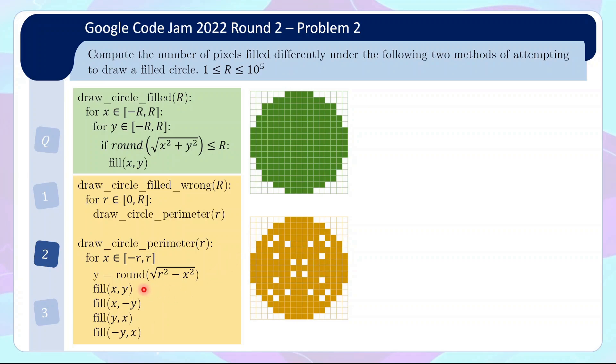So there's a bit of symmetry going around, but the x,y, x,-y is quite natural, but you also fill the reflection across y equals x. Basically you're supposed to calculate the number of pixels that are filled in one but not the other. And for this question the limit is r at most 10 to the 5.